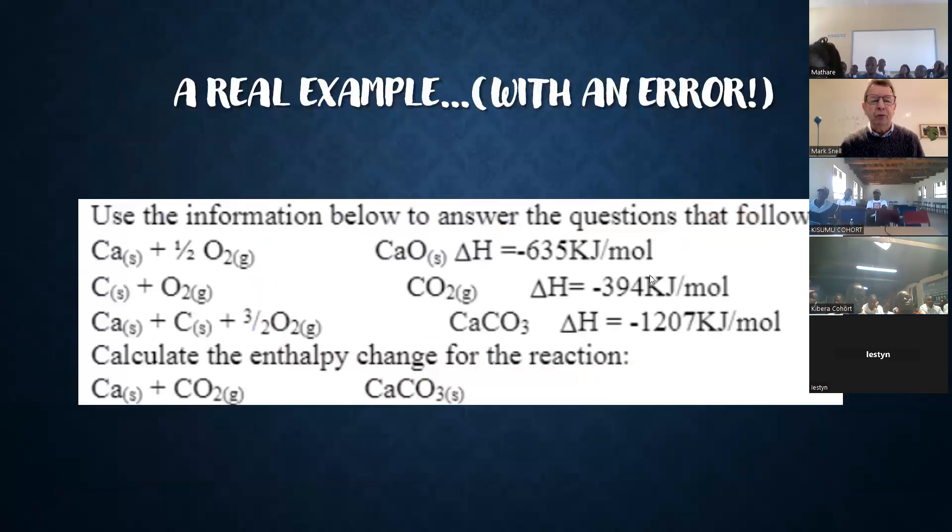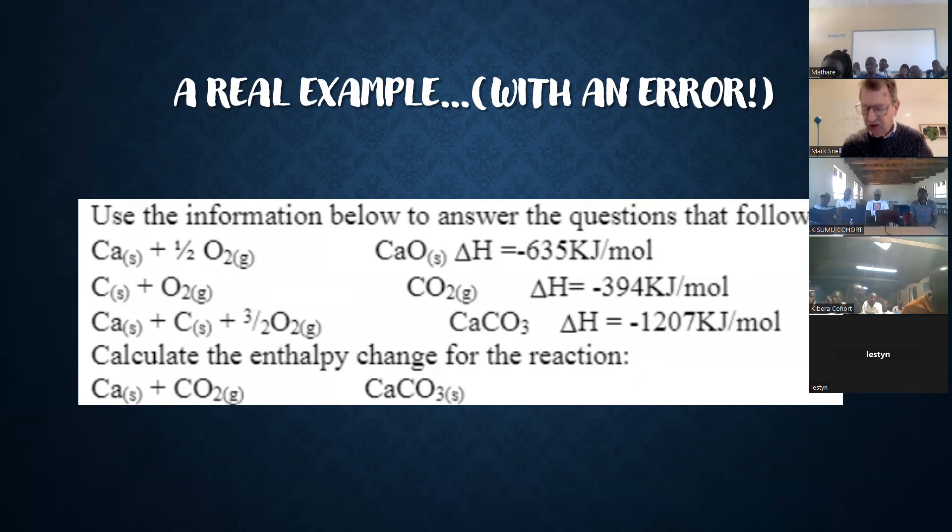Here's a real example. This is printed from a KCSE question. It's wrong. I want you just to look at this and see if you can spot what's wrong with it. I mean, I know the arrows are missing but that doesn't matter so much. There's something really rather serious missing. It's in the bottom line. If you look at the bottom line, it says that calcium and carbon dioxide makes calcium carbonate. Well, it doesn't, does it? What it should say is that calcium oxide and carbon dioxide makes calcium carbonate. But this was printed in an examination paper. That's pretty poor.